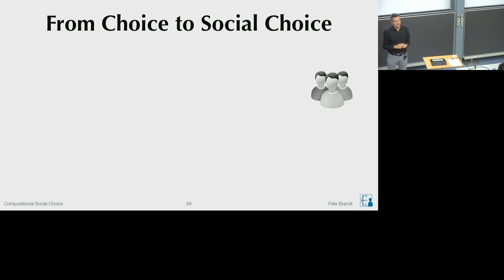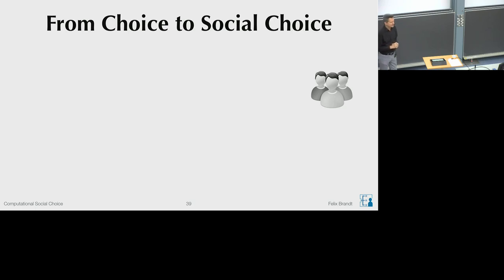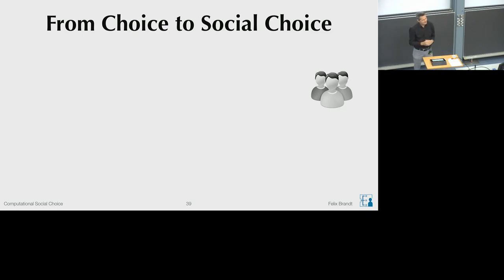The outline for today's lecture is as follows. We are taking some baby steps: two weeks ago we talked about individual choice, now we are adding several decision makers and talking about choice based on the preferences of multiple voters. We will first restrict attention to two different alternatives, where we'll have elegant positive results, then discuss strategic manipulation, then move to more than two alternatives where we'll encounter the Condorcet paradox and possibly Arrow's impossibility theorem.